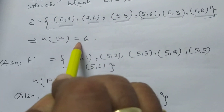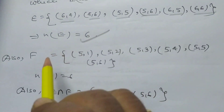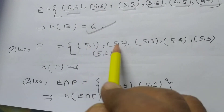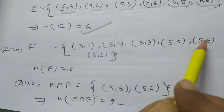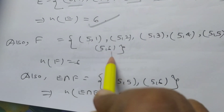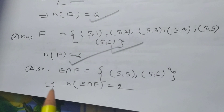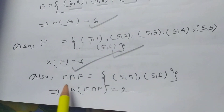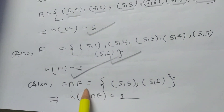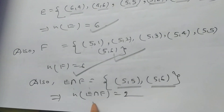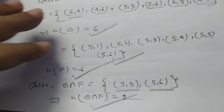The cardinal number of E is equal to 6. F equals {(5,1), (5,2), (5,3), (5,4), (5,5), (5,6)}, so the cardinal number of F is equal to 6. Also, E intersection F equals {(5,5), (5,6)}, so the cardinal number of E intersection F is equal to 2.